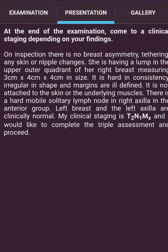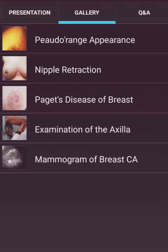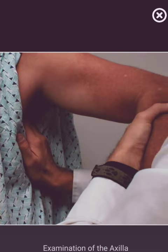Presentation — come to a clinical staging depending on your findings. On inspection: there is no breast asymmetry, tethering, or skin or nipple changes. She is having a lump in the upper outer quadrant of the right breast. It is hard in consistency, irregular in shape, and margins are ill-defined. It is not attached to the skin or the underlying muscle. There is a hard mobile solitary lymph node in the right axilla in the anterior group. Left breast and left axilla are clinically normal. My clinical staging is T2 N1 M0, and I would like to complete the triple assessment. Images shown: peau d'orange, nipple retraction, Paget's disease of the breast, examination of the axilla, and mammogram.